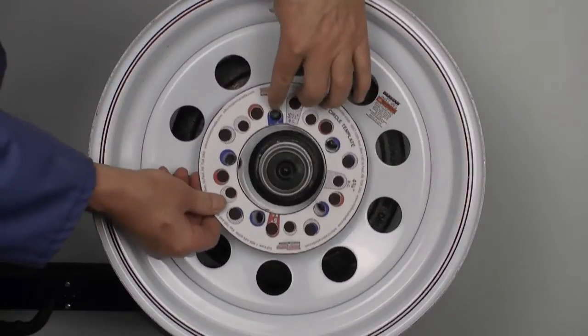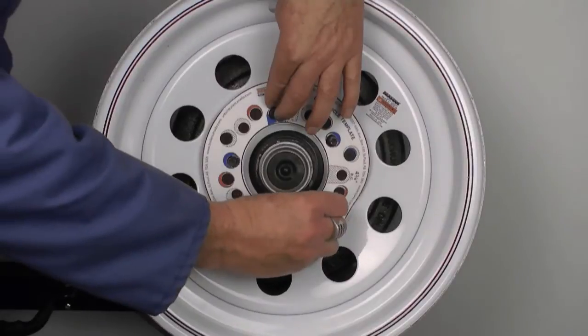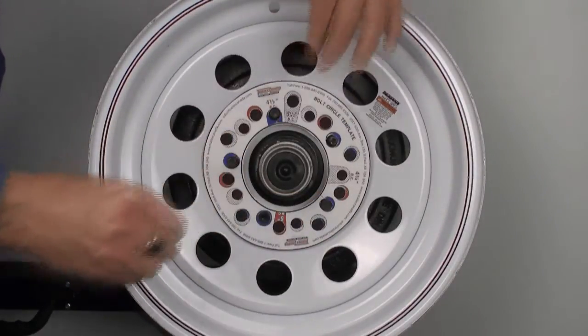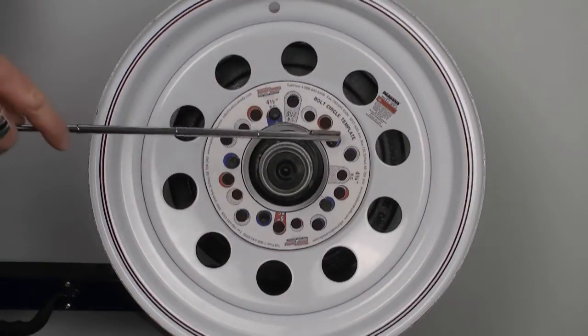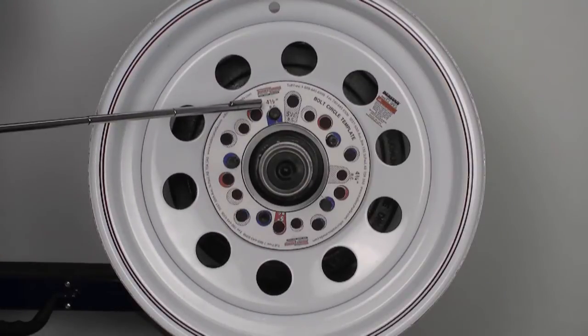Measuring the bolt circle pattern will ensure that if you order an axle, your wheels will fit onto the hubs. The most common bolt pattern on a trailer with 5 bolt wheels is 5 on 4 1/2 inch. For axles with 6 bolt wheels, the bolt pattern is 6 on 5 1/2 inch. And for axles with 8 bolt wheels, the bolt pattern is 8 on 6 1/2 inch.